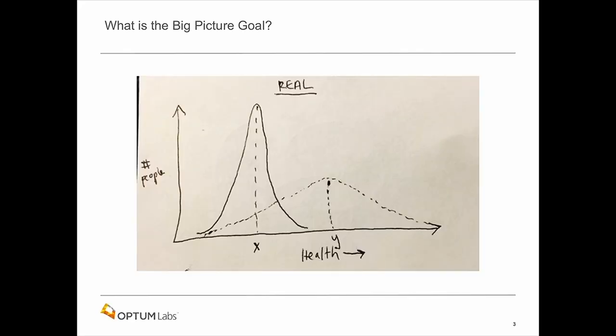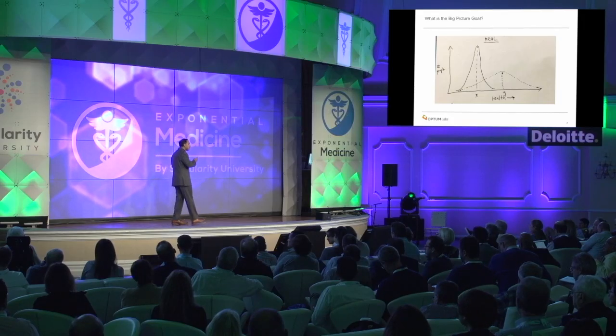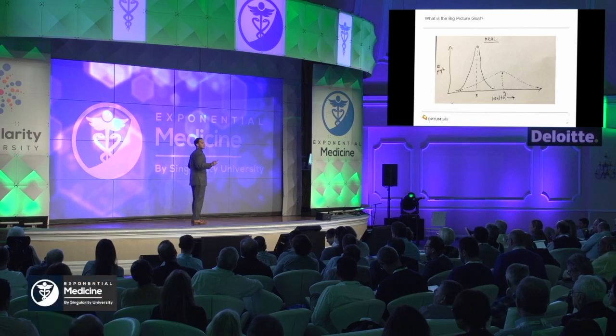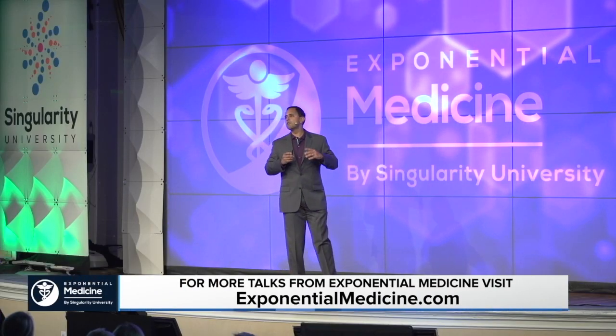But in truth, most interventions look something more like this: the benefits are seen in a small group of people, the average health gets better, but the distribution actually increases. Many advances help a small number of people, but at the cost of worsening disparities across the entire group. This is the classic definition of population health — we're interested not only in the average, but also the distribution of health outcomes.